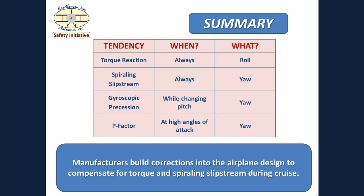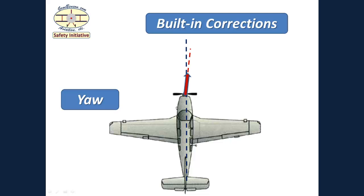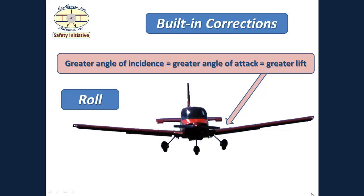Manufacturers build corrections into the airplane design to compensate for torque and spiraling slipstream during cruise. Just a quick word about typical ways that manufacturers build in corrections for the turning tendencies so that we don't need to apply aileron or rudder pressure during cruise. One method is to cant the engine slightly to the right. This produces a right yaw tendency and works to compensate for spiraling slipstream during cruise.